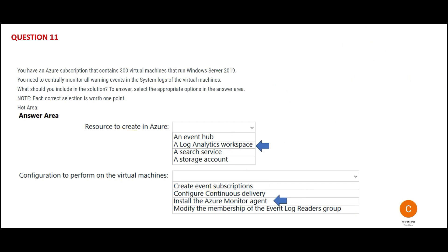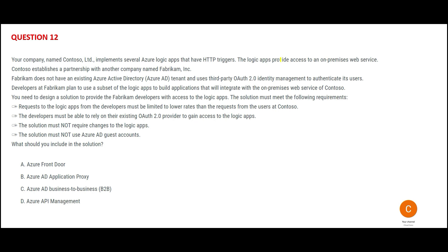In the next question, there are two companies. One already uses Active Directory, and the other uses a third-party authentication tool. Developers from both companies need to collaborate to build an application, and you need to provide them access to logic apps. The key requirements are: developers from the other company should still use OAuth 2.0, the solution must not require changes to any logic apps, and the solution should not use guest accounts. Whenever you see an Active Directory tenant combined with OAuth 2.0 third-party tools, the answer is API Management — always remember this thumb rule.